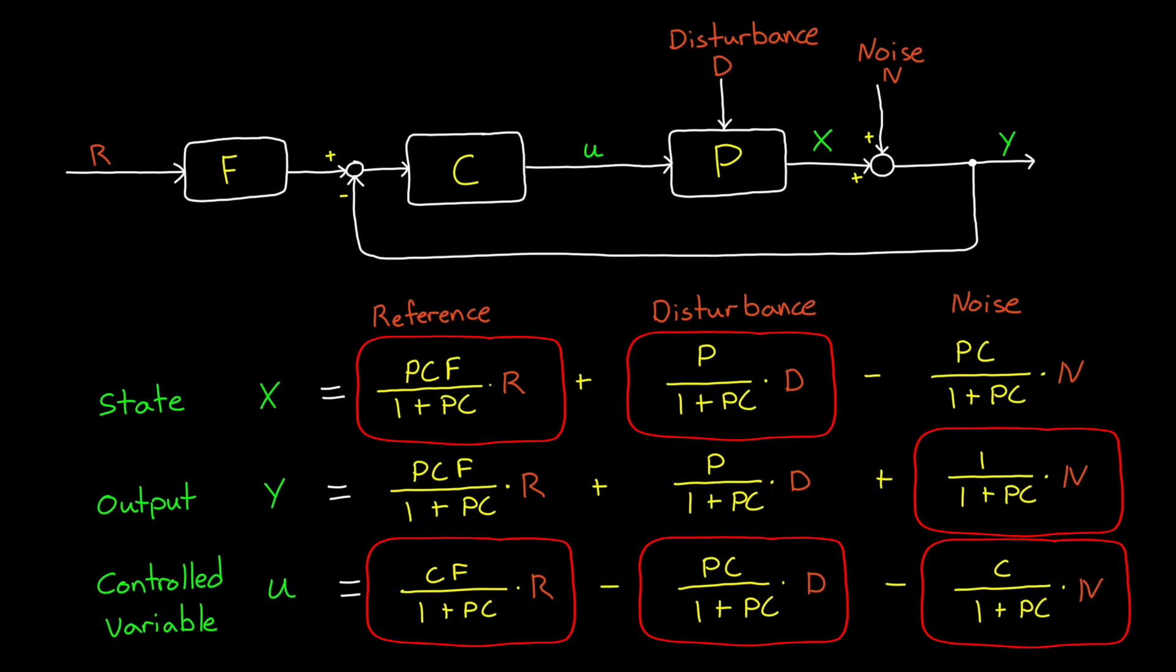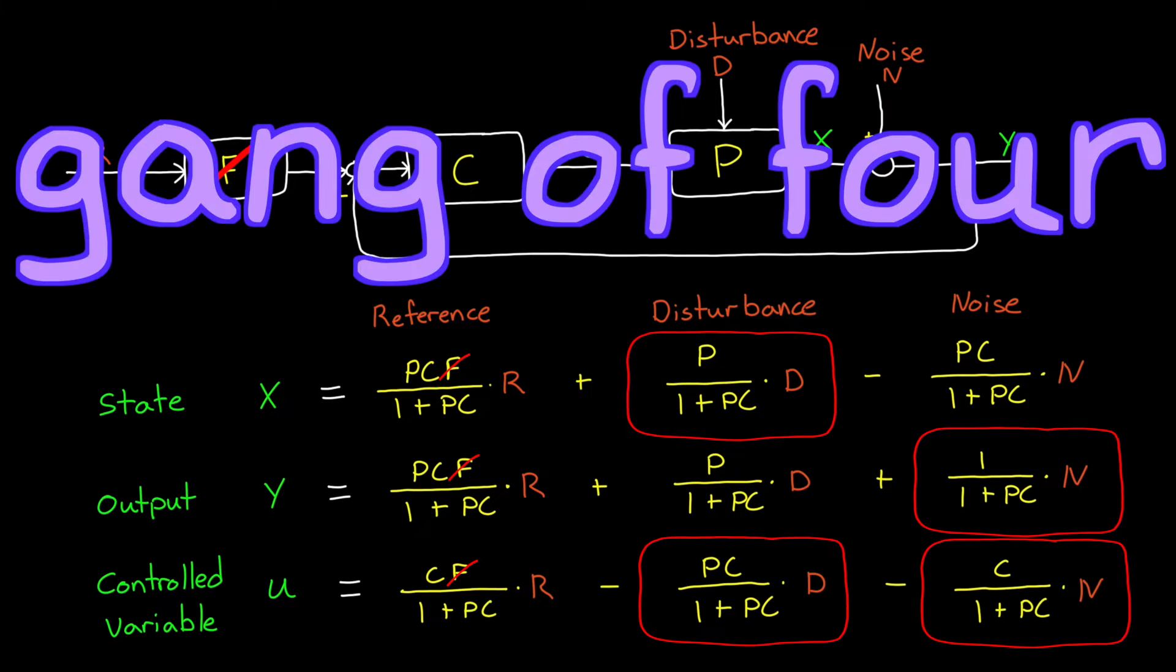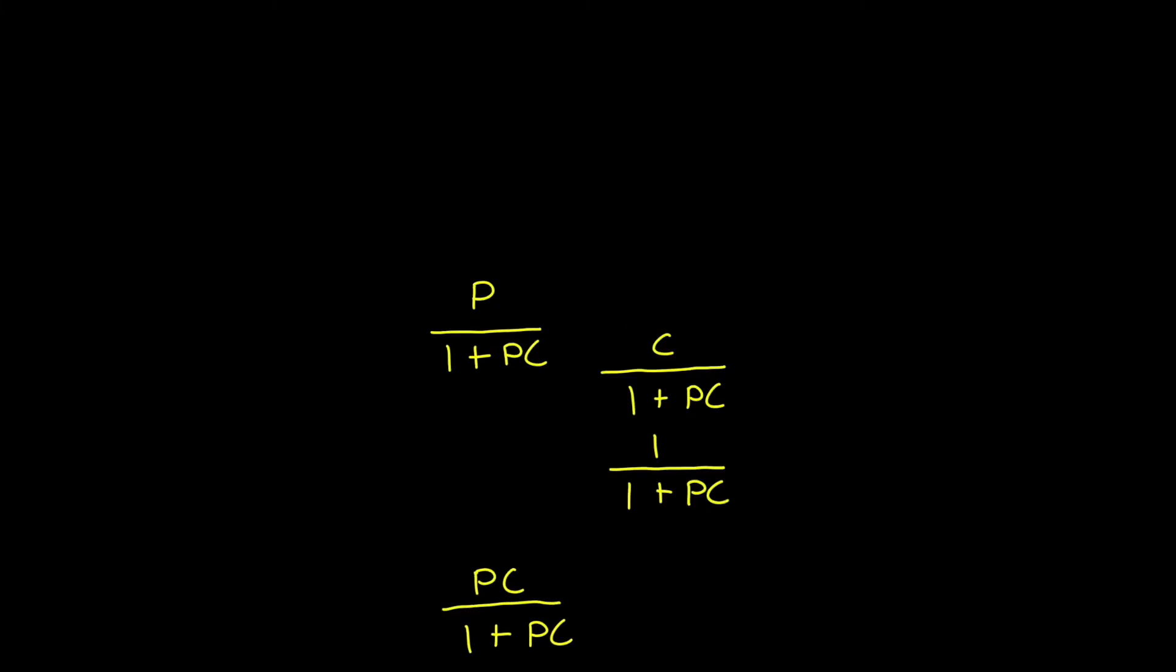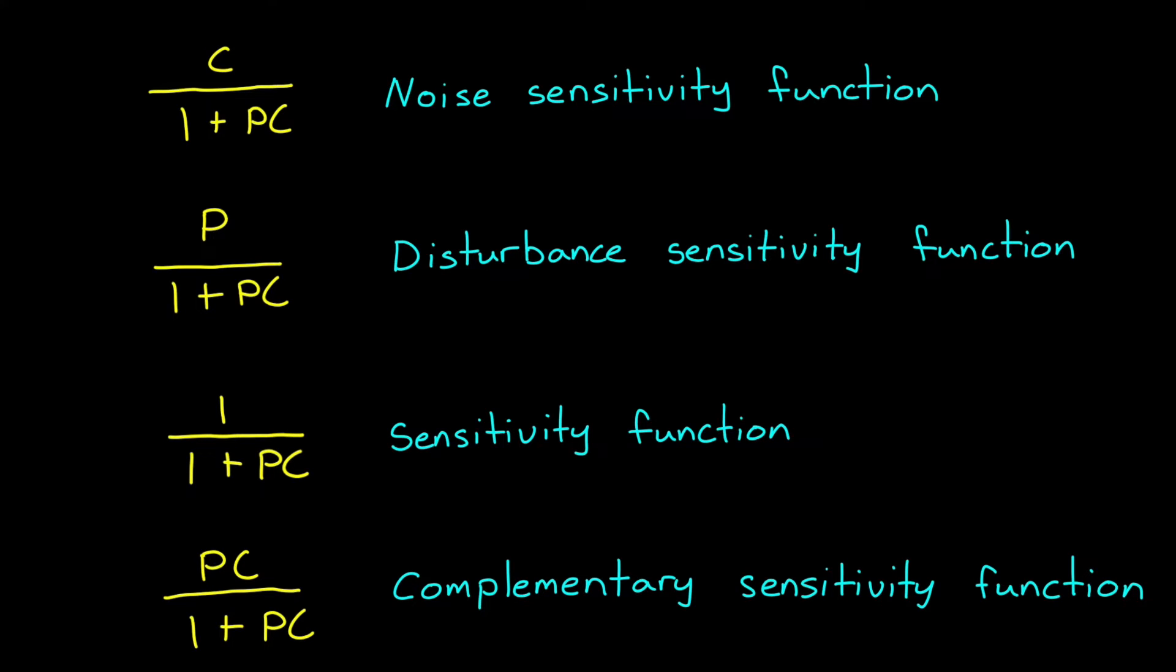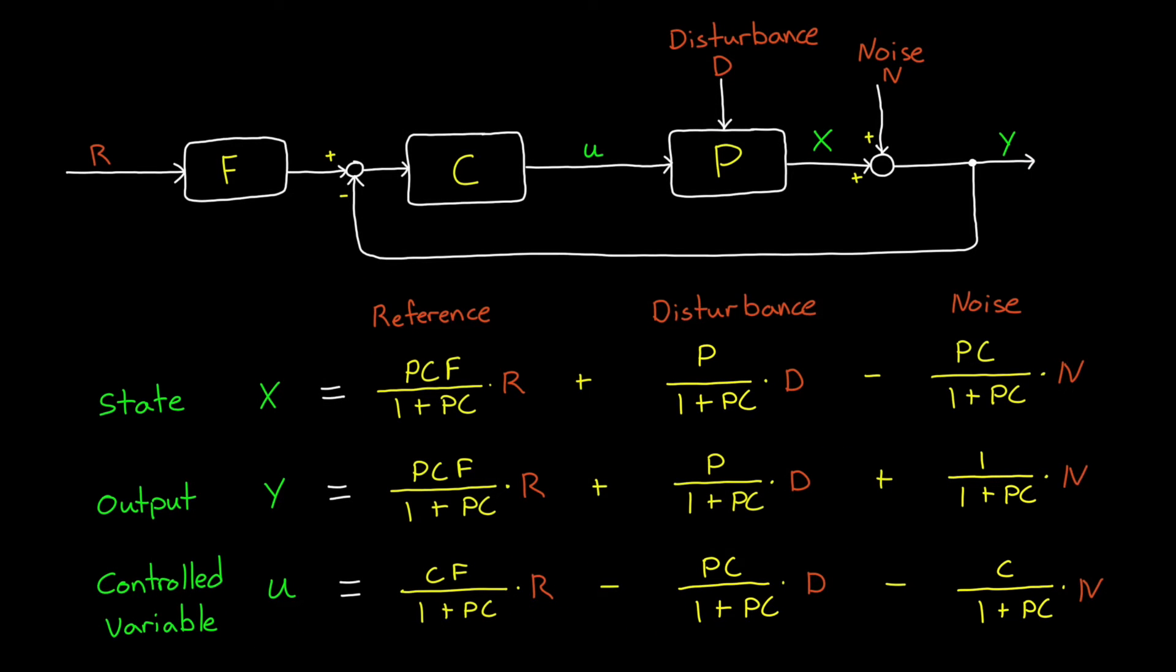And if you're working with a pure feedback system, or in other words, we set the feedforward term F to one, or just take it away, then these six transfer functions condense down to four, the so-called Gang of Four. And these have names like the noise sensitivity function, and the disturbance sensitivity function, and the sensitivity function, and the complementary sensitivity function. There's a lot of sensitivities in these names, but the specific names aren't terribly important as long as you understand what each transfer function is telling us. And I think we get that nicely laid out in this long form, which is why I have a slight preference for looking at it this way, rather than trying to remember what the complementary sensitivity function means.